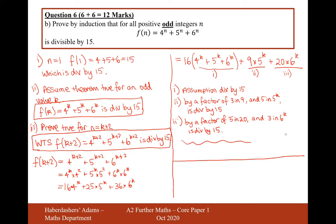We have proven part 3. To conclude part 4: as we have proven true for n equals 1, and assuming for an odd value k our theorem works, then for the next odd number k plus 2 we have shown our theorem also works. Therefore, by proof by induction, our theorem works for all odd integers n. Make sure you clearly state that this only works for odd integers n. That's 6 marks for part B, 12 marks in total for question 6. Let's now move on to the final question, question 7.